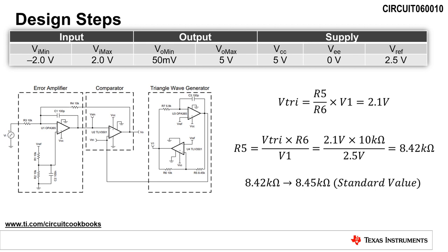The amplitude of the triangle wave generator is equal to R5 divided by R6 times V1, where V1 is the comparator output voltage, which is nominally 2.5 volts. Selecting R6 equal to 10 kilo ohms, we are able to calculate R5 as 8.42 kilo ohms. We will use the next closest standard resistor value of 8.45 kilo ohms for this design.